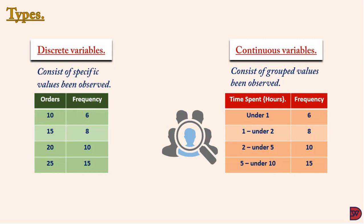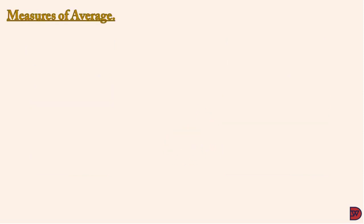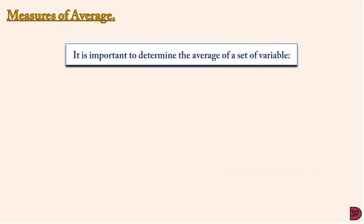For the continuous variable, it consists of values that have been grouped or categorized. Looking at the number of times a customer spends in the restaurant: six times a customer spends less than an hour, eight times between one and under two hours, ten times from two hours to under five hours, and 15 times between five hours and under ten hours.